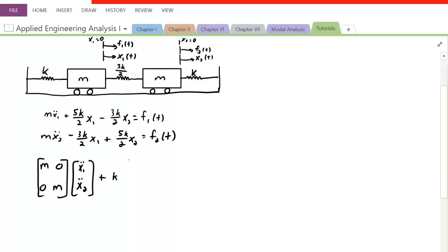So I'm going to bring the constant K outside of the matrix. For X1 and X2, we have values 5 over 2, negative 3 over 2 for the first ODE. The second ODE we have negative 3 over 2 and 5 over 2. This is equal to the forcing functions F1 and F2.